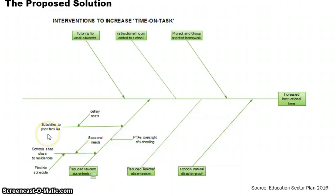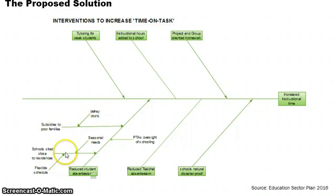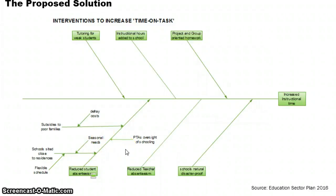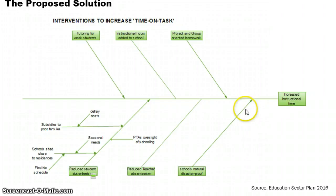Reducing student absenteeism can be addressed by a number of things: providing subsidies to poor families, defraying costs, siting schools closer to where people live, flexible schedules for seasonal needs, and PTA oversight of schooling. These are all positive considerations that can be used to increase instructional time on task.